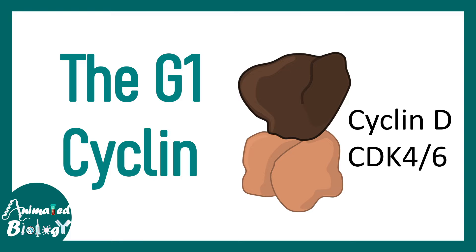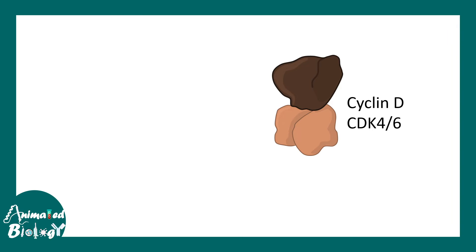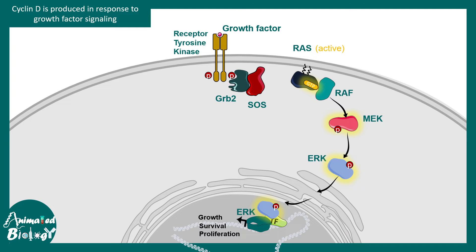The G1 cyclin-CDK complex is cyclin D with CDK4/6. Cyclin D and CDK4/6 become activated when there is ample growth factor signaling. Cyclin D is directly produced in response to mitogenic or growth factor signaling, telling the cell whether growth factors are present in the environment. For example, the MAP kinase pathway is triggered by growth factor binding, and one key downstream gene activated in the RAS-RAF pathway is cyclin D — one of its most abundant target genes.